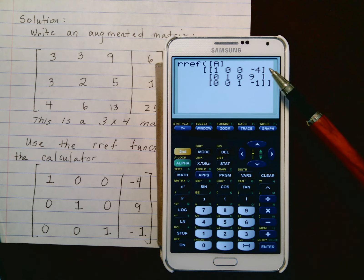It shows us this is the reduced row echelon form, and we can clearly see the solution is x is negative 4, y is 9, and z is negative 1.